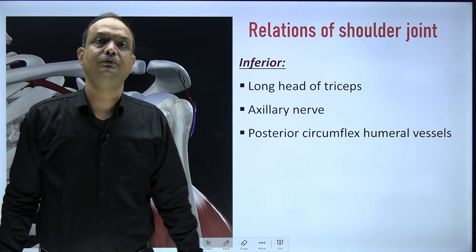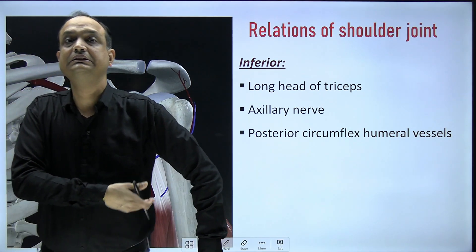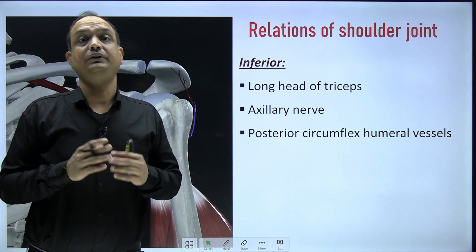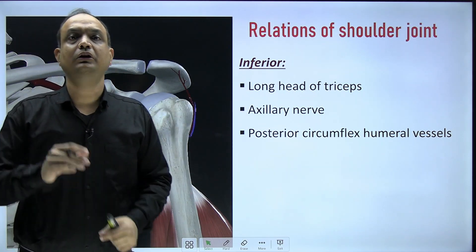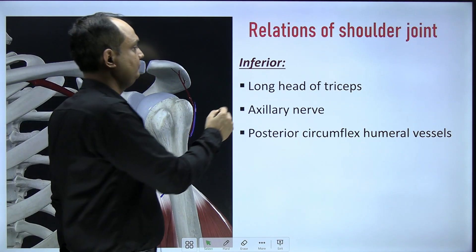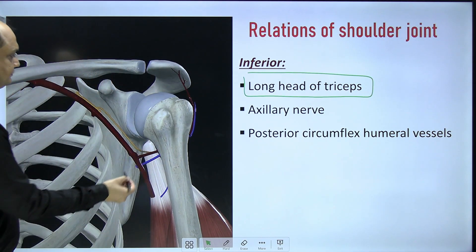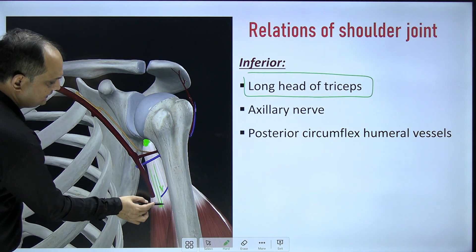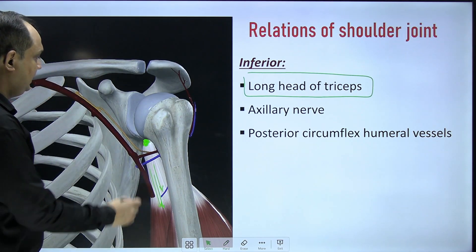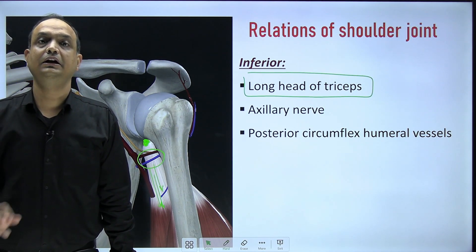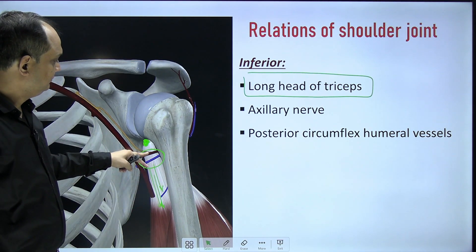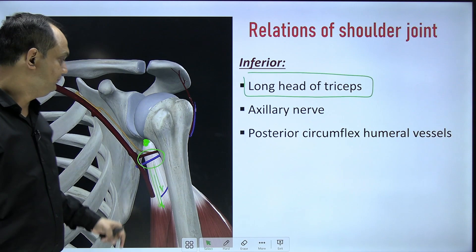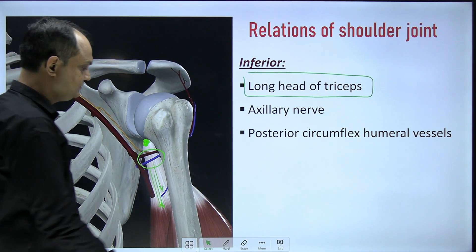Inferiorly, there are not many muscles in the lower part of the shoulder joint, which is why the inferior part is the weakest part of the joint. In the inferior part, there is only one muscle arising from the infraglenoid tubercle — that is the long head of triceps. In this image you can see the infraglenoid tubercle and the long head of triceps going downward. Additionally, there are two very important structures related to the surgical neck of the humerus, which lies just below the shoulder joint. When dislocation of the head of humerus occurs, it may damage these structures.